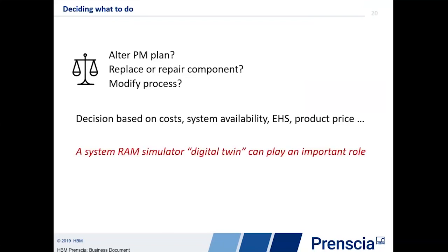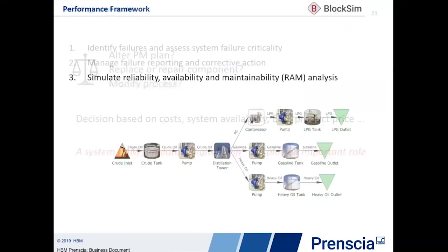What we have is a RAM simulator — a Reliability, Availability, and Maintainability simulator, like a digital twin for reliability — that describes how the system is going to perform. It can play a really important role in helping you understand what should be done. The RAM simulator is a description of your overall process. The picture here shows a gas separation process where at the front end we're taking in crude and separating it into three components. Along the way, we describe every critical piece of equipment in the overall process.